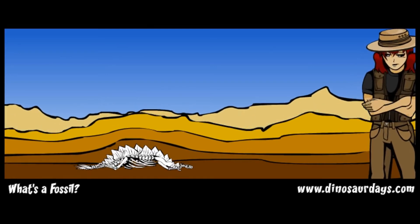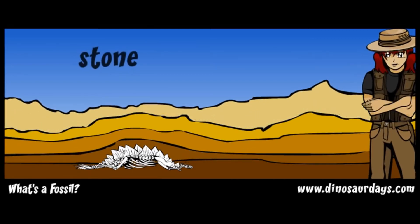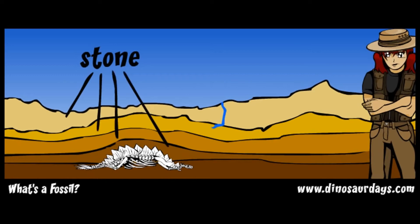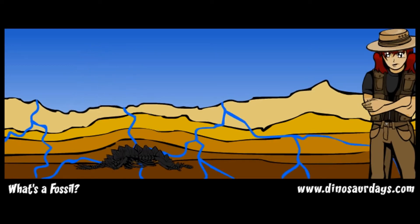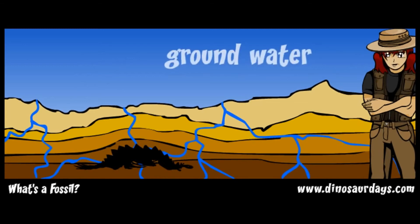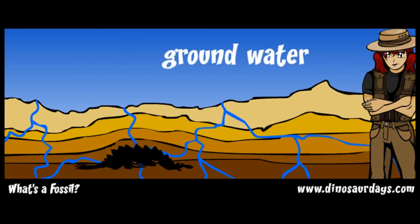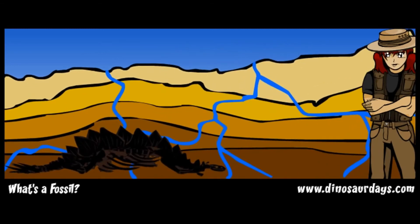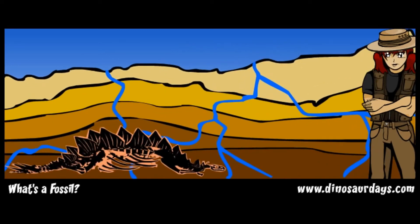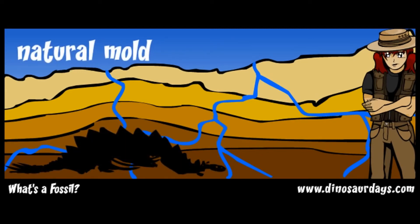Now the skeleton is completely surrounded by compressed stone. The bone is slowly washed away by little trickles of water, called groundwater. The bones leave an open space in the exact shape of the dinosaur skeleton. This open space is called a natural mold.